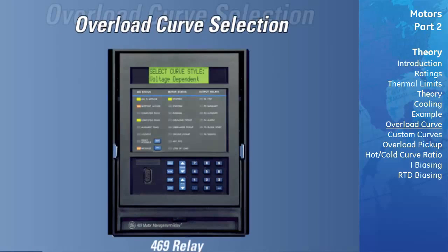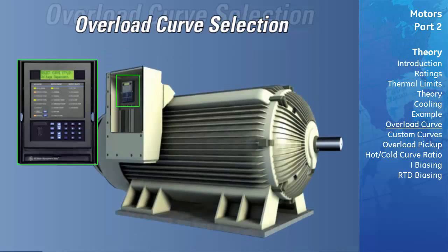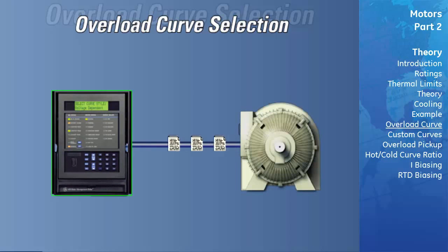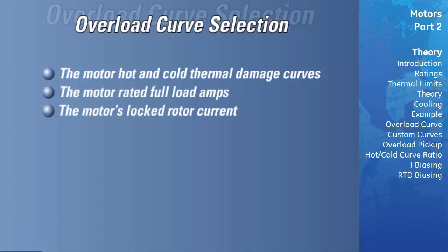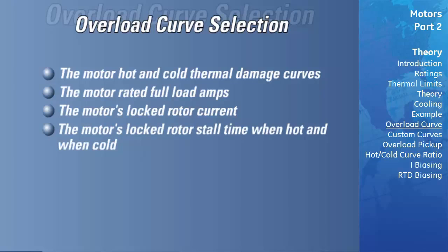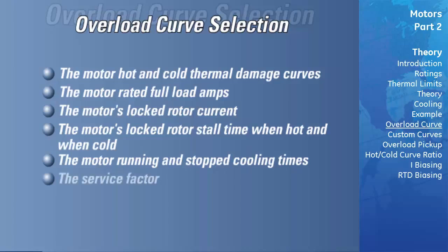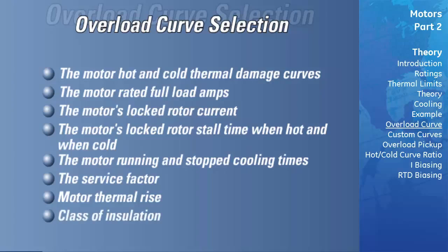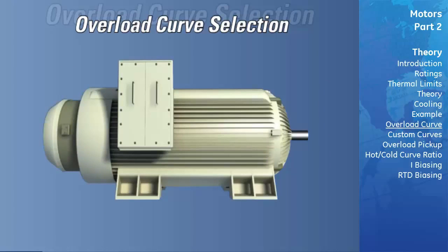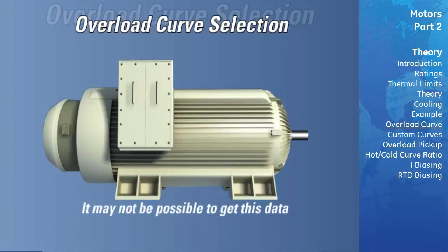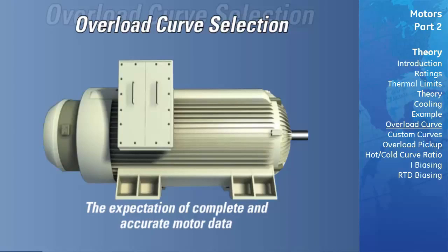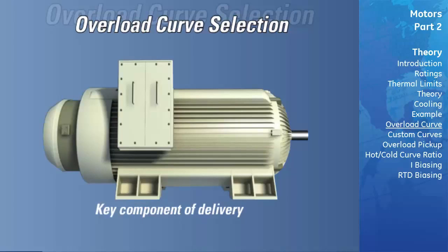Now that you understand the concept of motor thermal modeling, we will go into the relay settings. The first step is to obtain accurate motor data from the motor supplier. This data must include critical motor information. Note that on many large custom motors, this data may not be supplied as part of the delivery package unless requested by the customer. Once the motor has been shipped, it may not be possible to get this data. It is therefore critical that the customer makes it clear to the motor supplier the expectation of complete and accurate motor data being shipped with the motor.